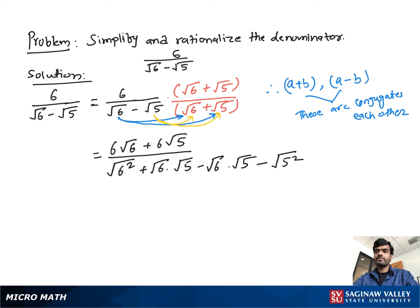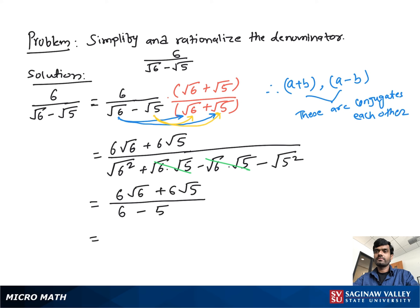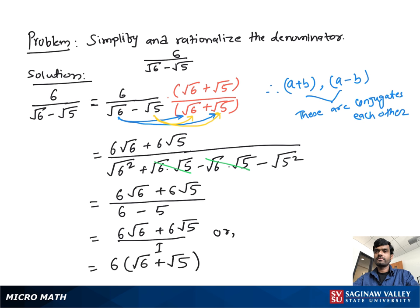Simplifying further, we get 6 times square root 6 plus 6 times square root 5 over: square root 6 squared is 6, the middle terms cancel, and we subtract 5, giving us 1. So we have 6 times square root 6 plus 6 times square root 5 over 1. Taking 6 as common, the final answer is 6 times open parenthesis square root 6 plus square root 5 close parenthesis.